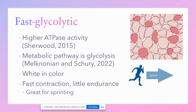Moving on to the last type: fast glycolytic. Similar to fast oxidative in that fast glycolytic fibers also have a higher ATPase activity, so they can split ATP fast enough for the cross bridge to continue cycling rapidly, creating that fast twitch. However, rather than using oxidative phosphorylation, these fibers use glycolysis. They have a lower number of mitochondria but a higher number of glycolytic enzymes, and they have a lot of stored glycogen that can be broken down to create ATP. Glycolysis is an anaerobic process, so it doesn't need much oxygen, meaning we see fewer capillaries and less myoglobin, producing a whiter color in the muscle.